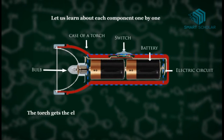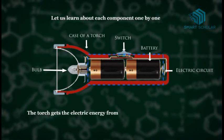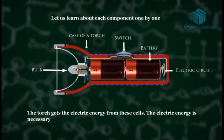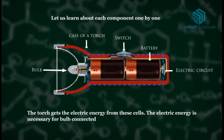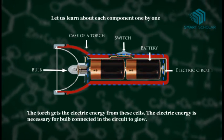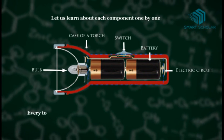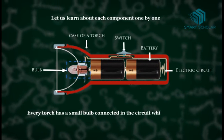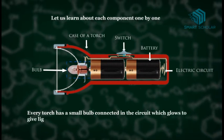The torch gets the electric energy from these cells. The electric energy is necessary for bulb connected in the circuit to glow. Every torch has a small bulb connected in the circuit which glows to give light.